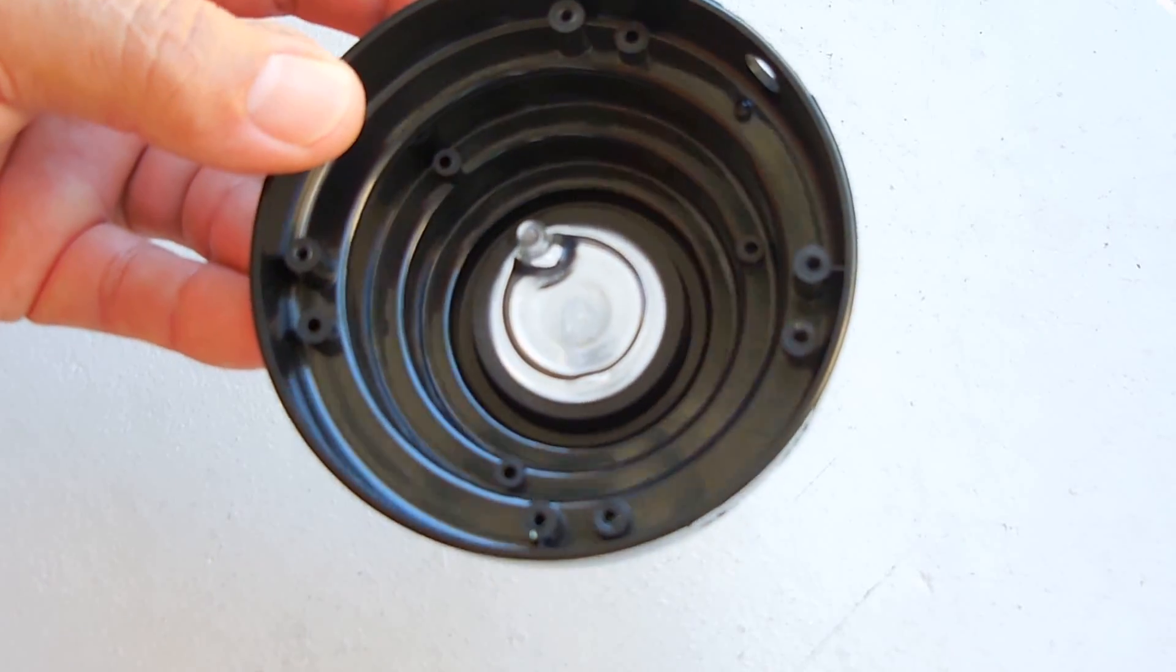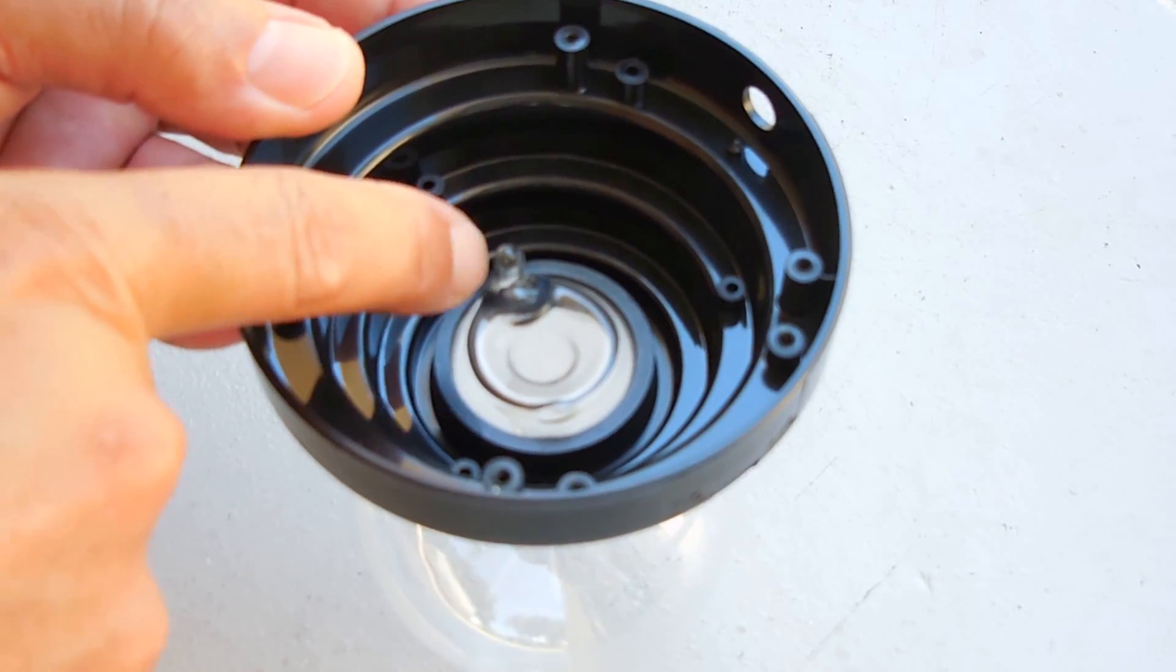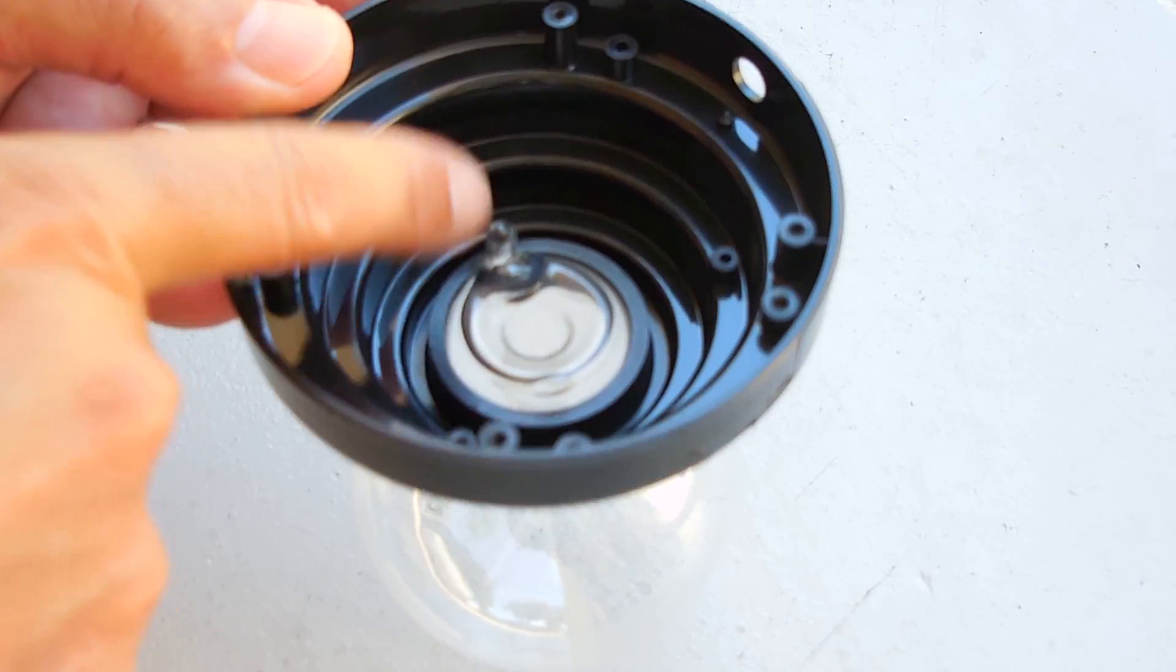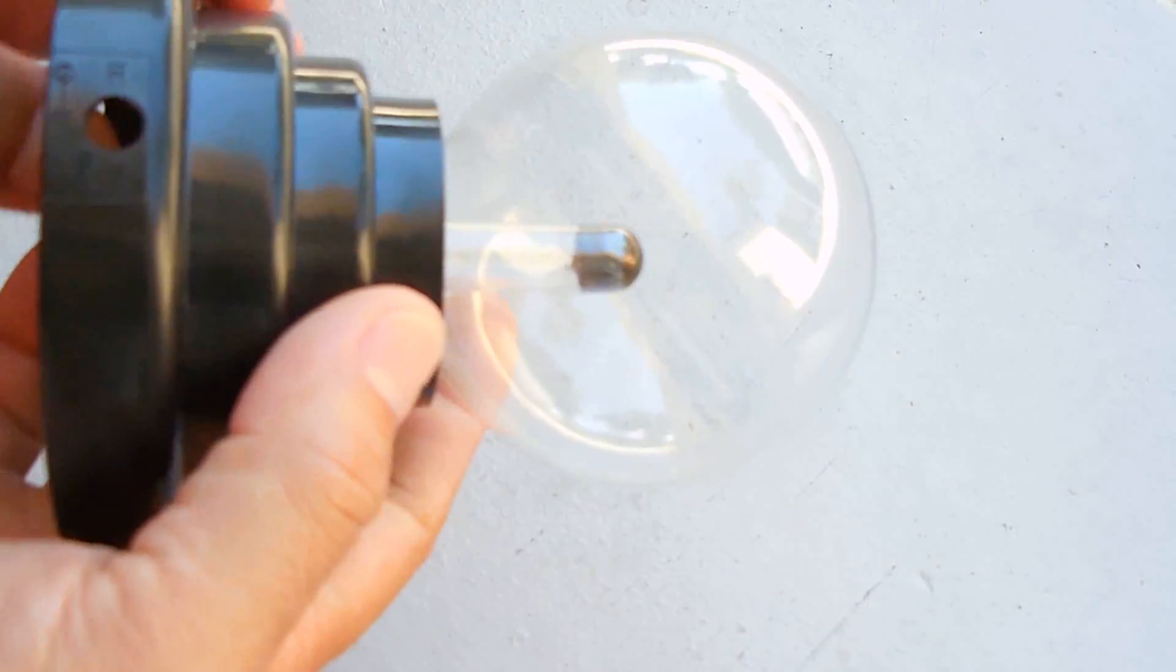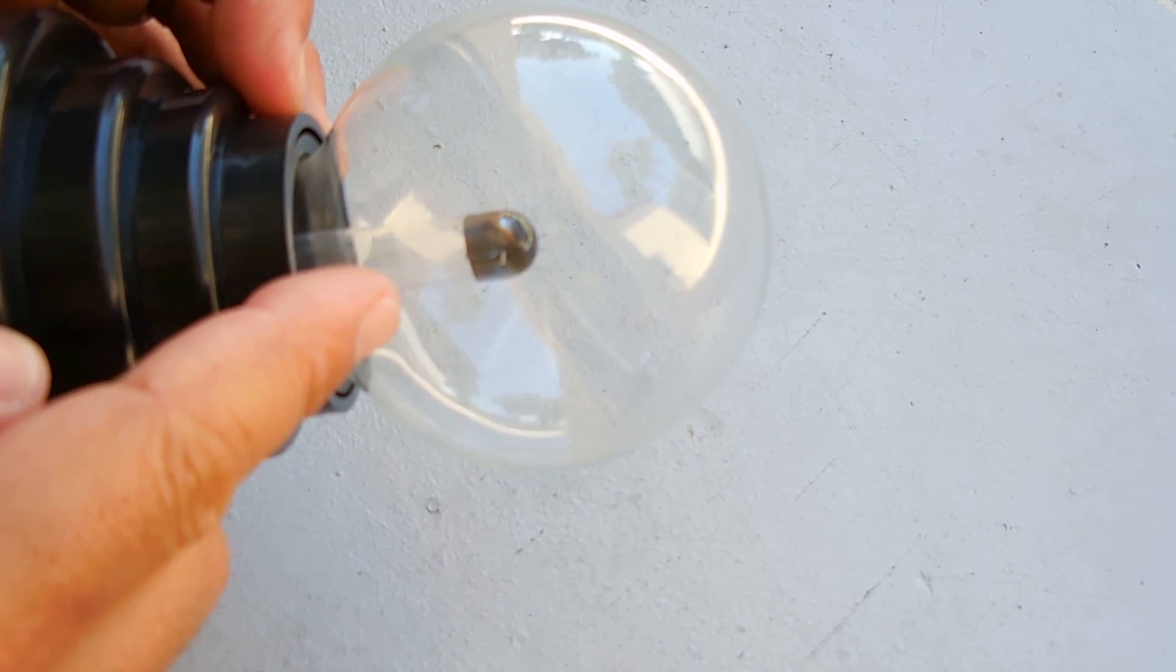And there you have it - it charged up just like a capacitor's plates. Now let's take this apart and take a look at the inside. It's been disassembled and you can see this nipple sticking up - that's where the gas was placed inside the globe and then sealed off.